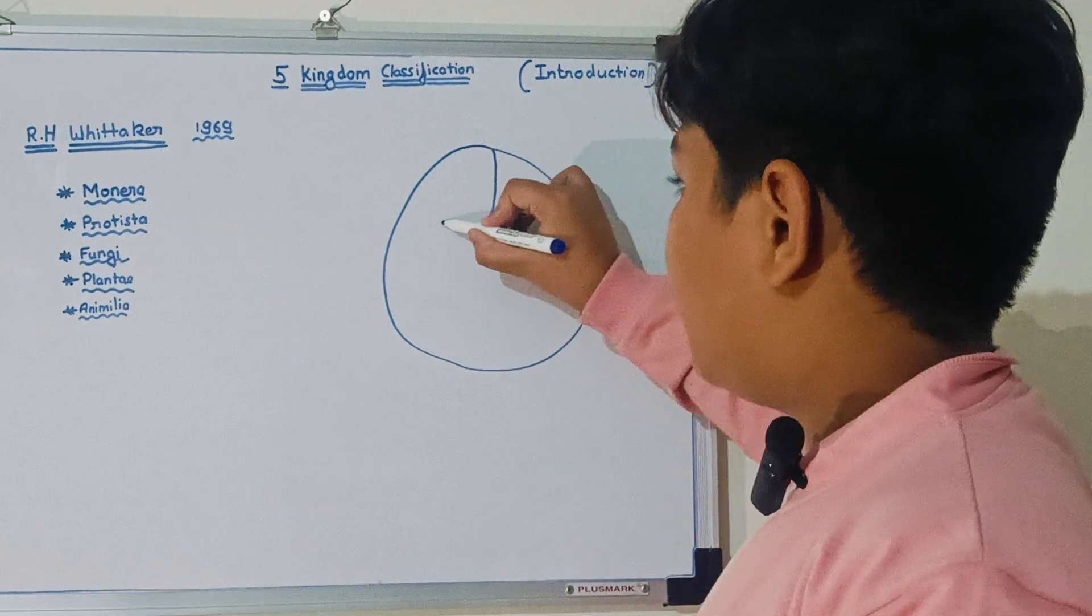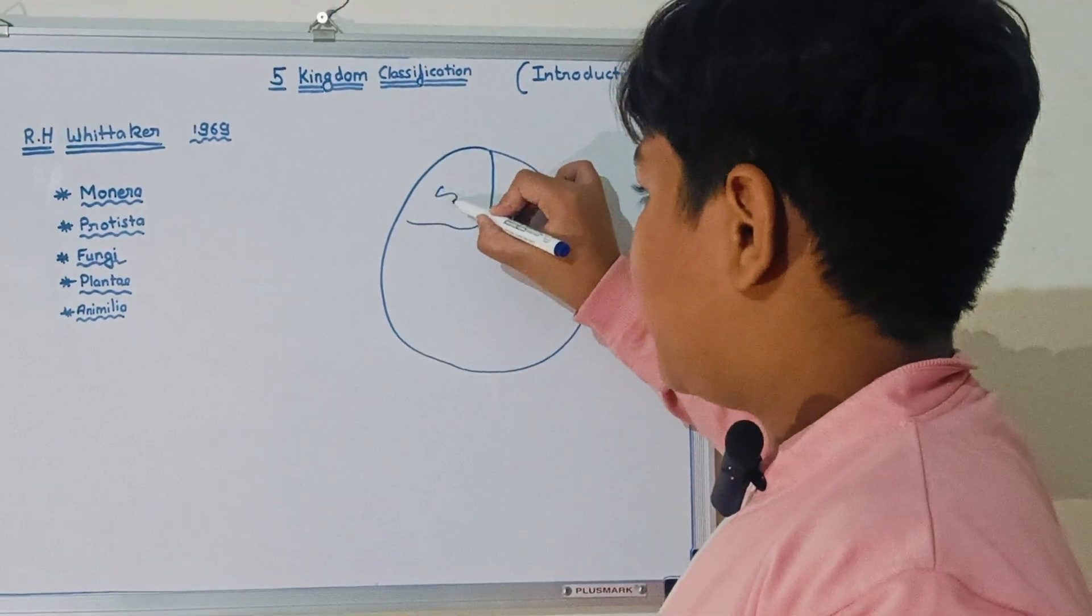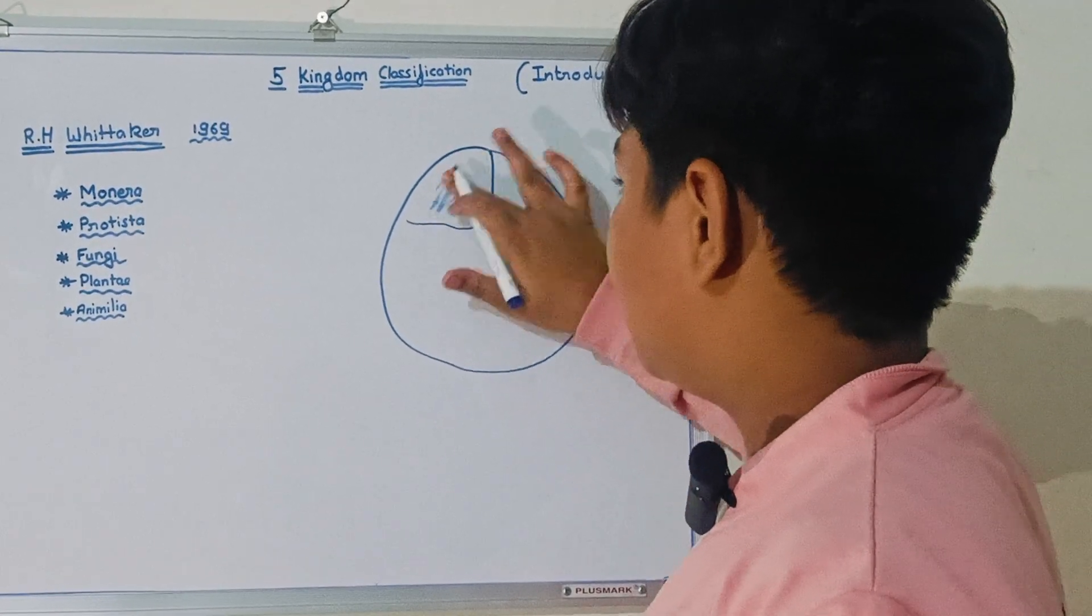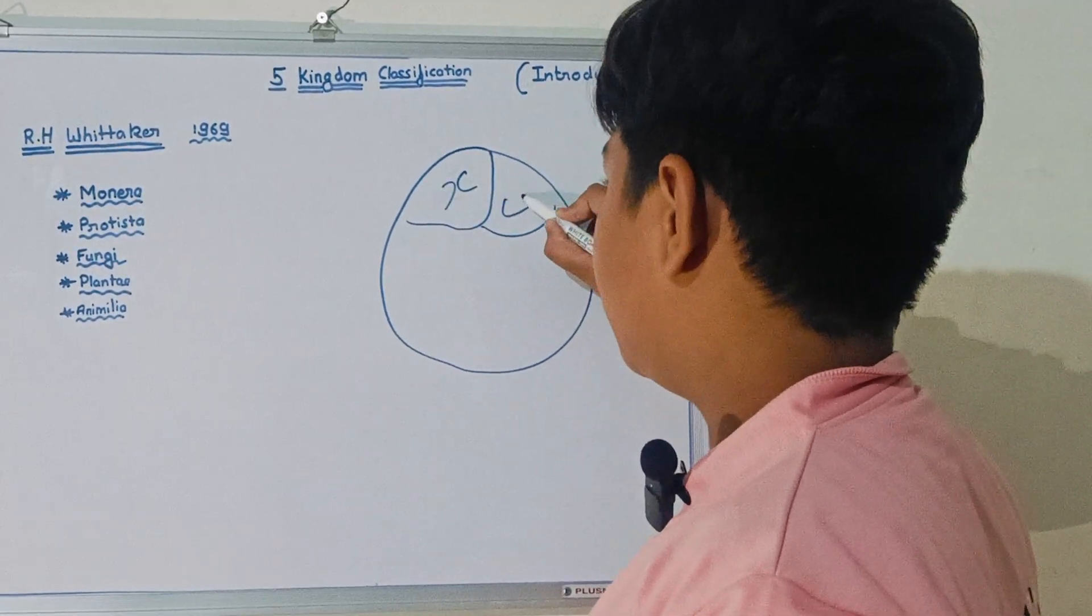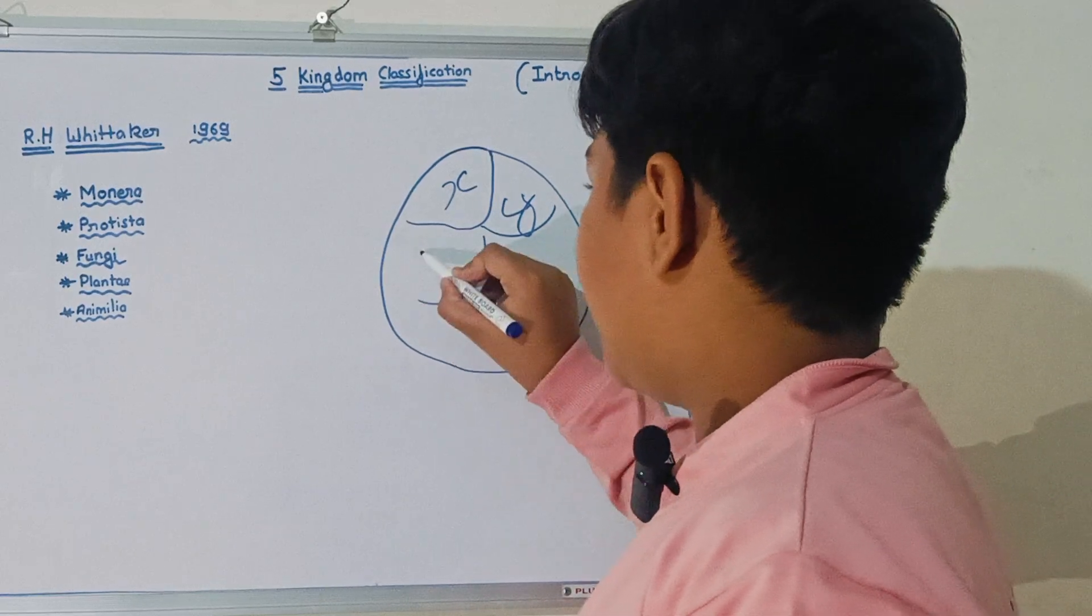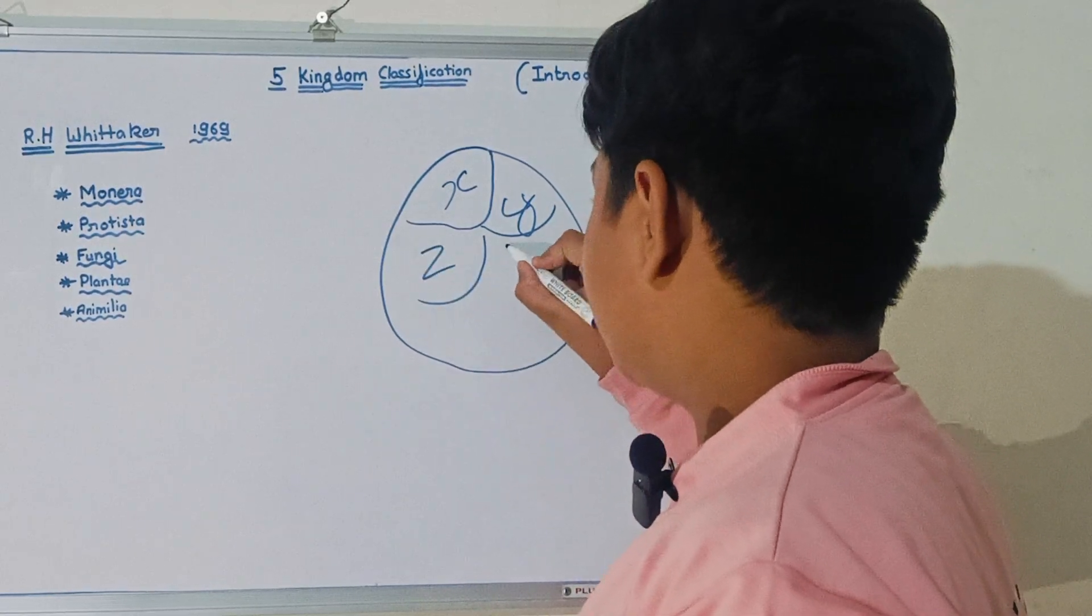This is something else: this is X, this is Y, this is Z, this is A.